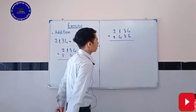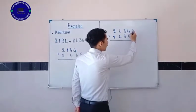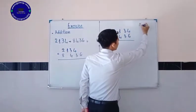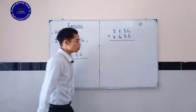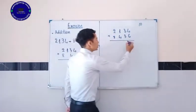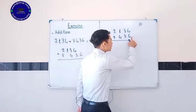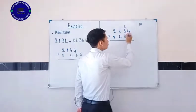When we add 4 and 6, we get 10. We write 0 under 6 and carry the 1 above 3.